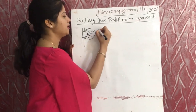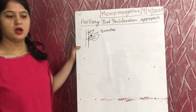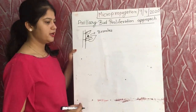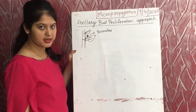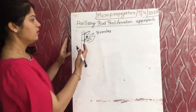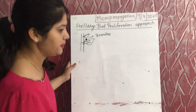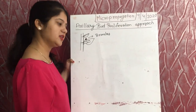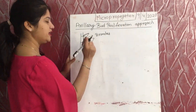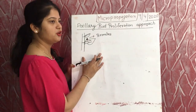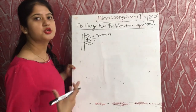The axillary bud helps in the development of branches. In the axillary bud proliferation approach, our explant is this axillary bud. We separate this axillary bud from the stem and then establish it on the nutrition media for further development. Due to continuous application of cytokinin in the nutrition media, these axillary buds develop into multiple shoots.